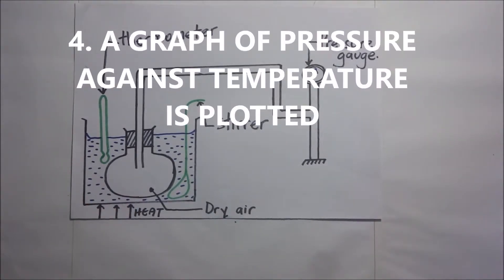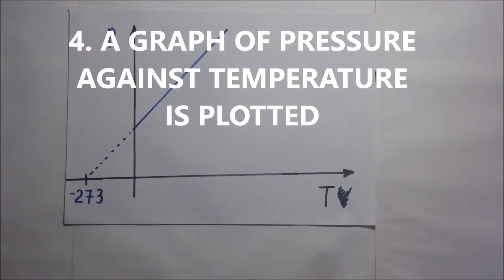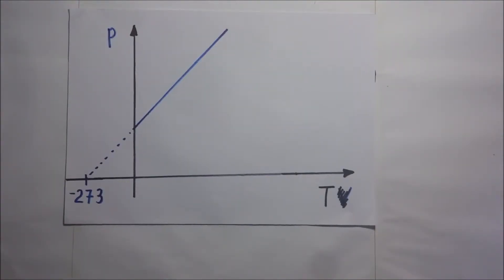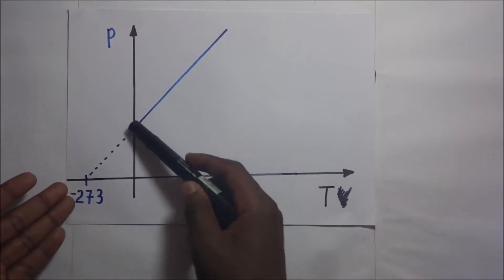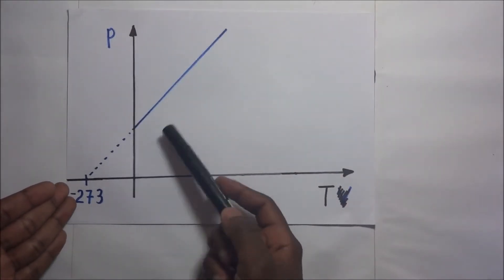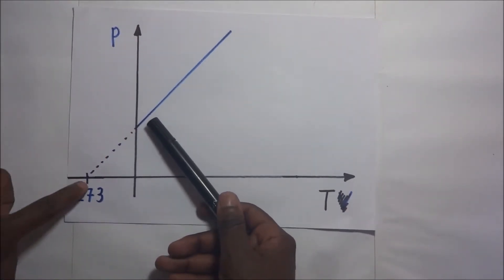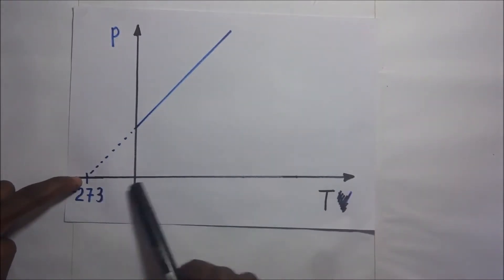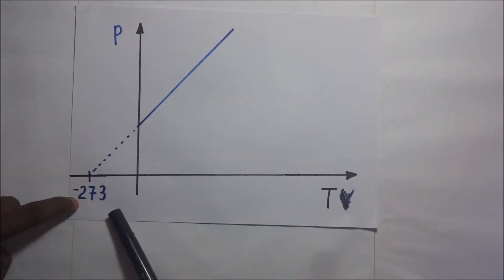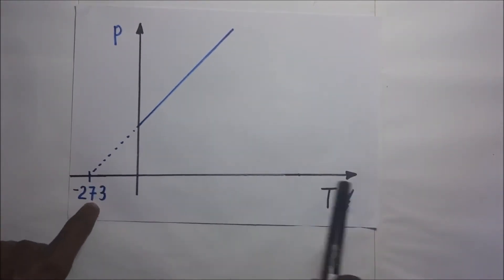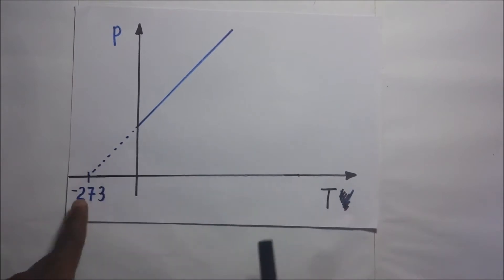After that, we plot a graph of pressure against temperature. Upon plotting this graph, we are able to obtain a straight line. The straight line does not go through the origin, but it can be extrapolated up to the point where the temperature is negative 273 degrees Celsius.